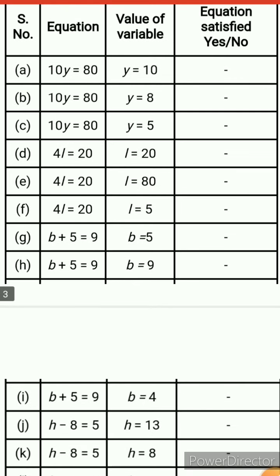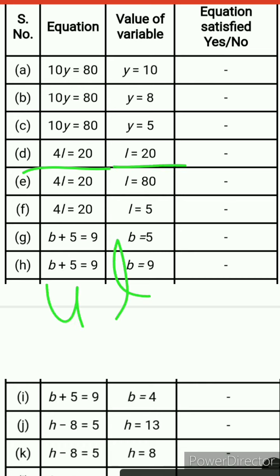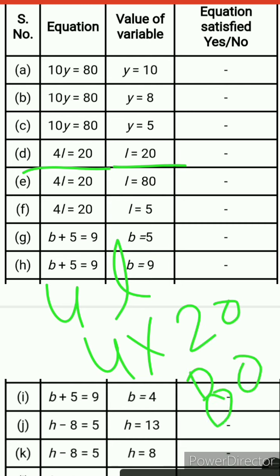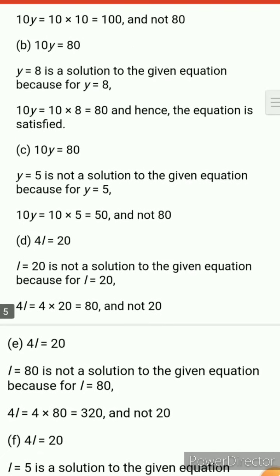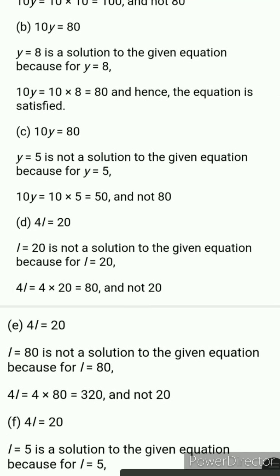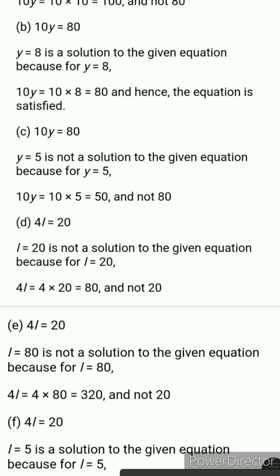Next one is 4l equals 20 and l equals 20. For 4l with l equals 20: 4 times 20 is 80, not 20. So the equation is not satisfied. Therefore l equals 20 is not a solution of the given equation, because for l equals 20 the answer is 80, not 20.